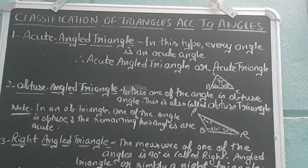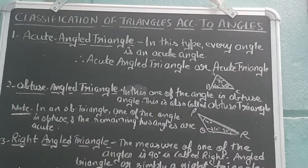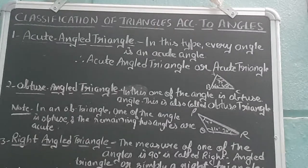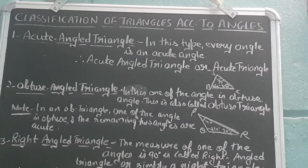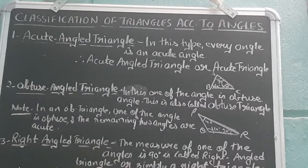The next type is the obtuse angle triangle. In this type, only one of the angles is an obtuse angle, so it is also called an obtuse triangle. For example, triangle PQR is drawn in which angle Q is 110 degrees — that is the obtuse angle, meaning its measurement is more than 90 degrees. Angle P is 40 degrees and angle R is 30 degrees.